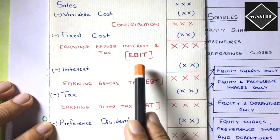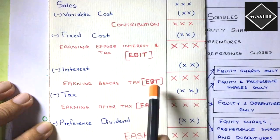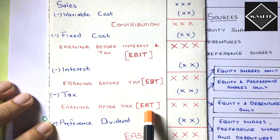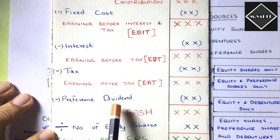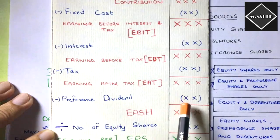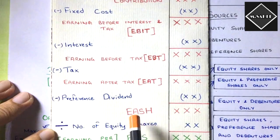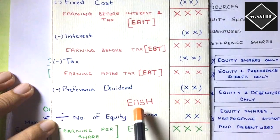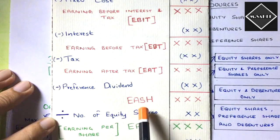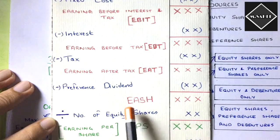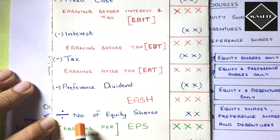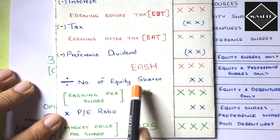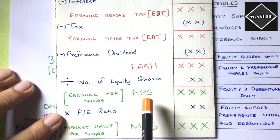So first subtract interest, then subtract tax to get Earning After Tax. Then, if there are preference shares, deduct the preference dividend — it is a fixed percentage dividend. After subtracting preference dividend from EAT, you arrive at EASH: Earning Available to Equity Shareholders. Then divide EASH by the number of equity shares to get EPS — Earning Per Share.